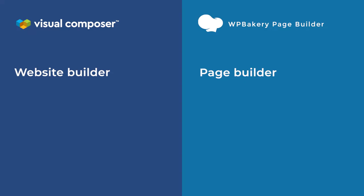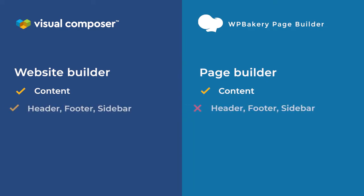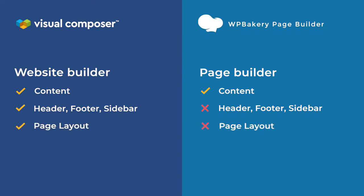Both plugins take care of the content part of your WordPress page, yet Visual Composer also allows designing headers, footers, and sidebars. Besides the theme default layout, Visual Composer gives you additional layout options. Both plugins have an API which allows creating custom elements for your projects, themes, and add-ons.